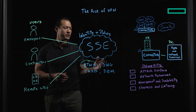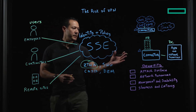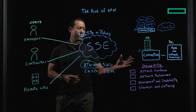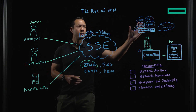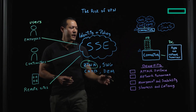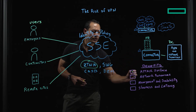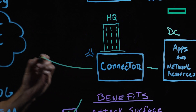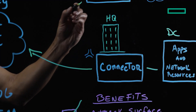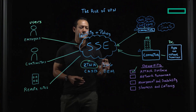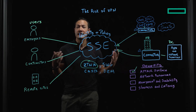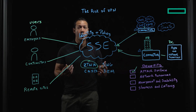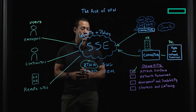In our solution, you will replace the VPN appliance with a lightweight software called a connector. The connector will allow you to connect to private applications as well as to public cloud resources. Our connector reduces the attack surface because it only requires outbound connection to the SSE cloud, so the IT admin does not have to open unnecessary inbound firewall ports.